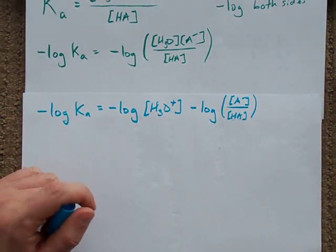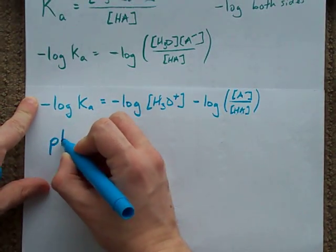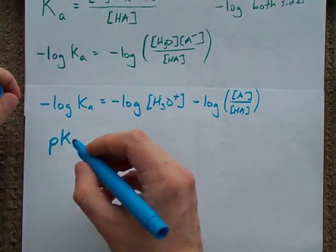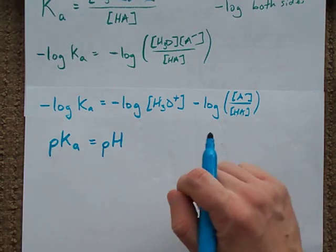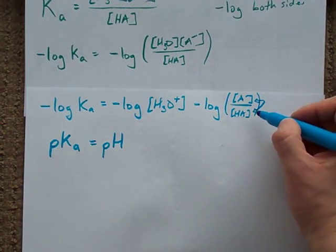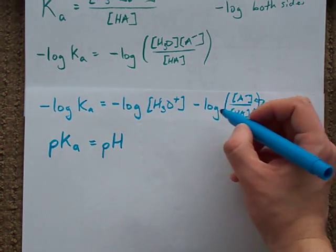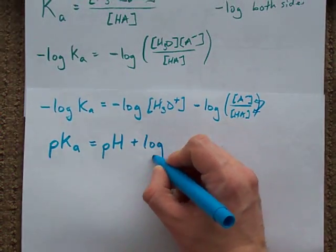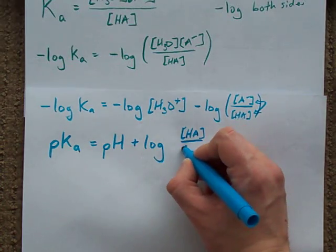Now, check this out. The negative log of Ka is a special number called the pKa. The negative log of H3O plus, hopefully you guys recognize that that's pH. And I'm going to flip this here, take this to the exponent of negative one. By doing that, I can cause this to be positive: plus the log of HA over A minus. That's another log rule.